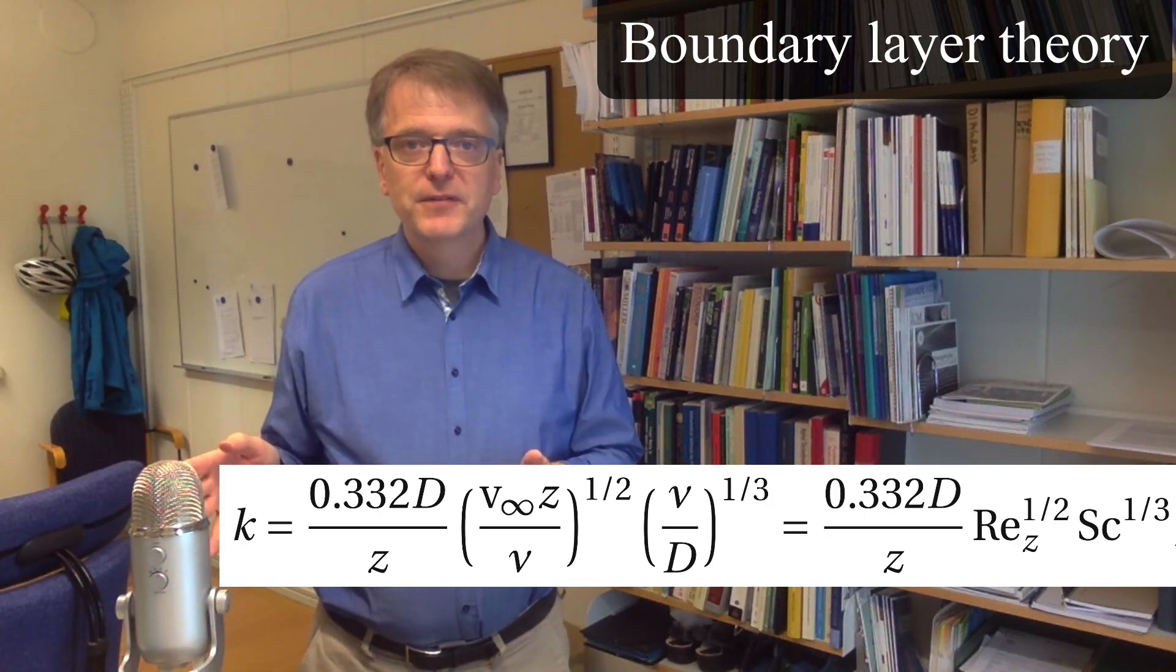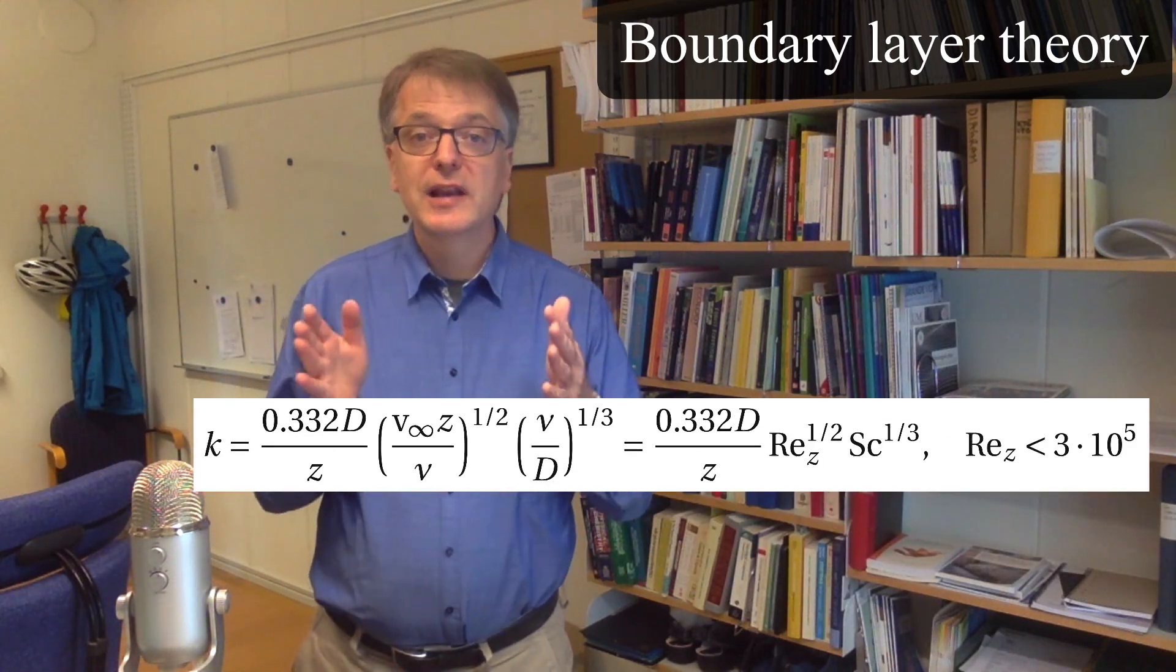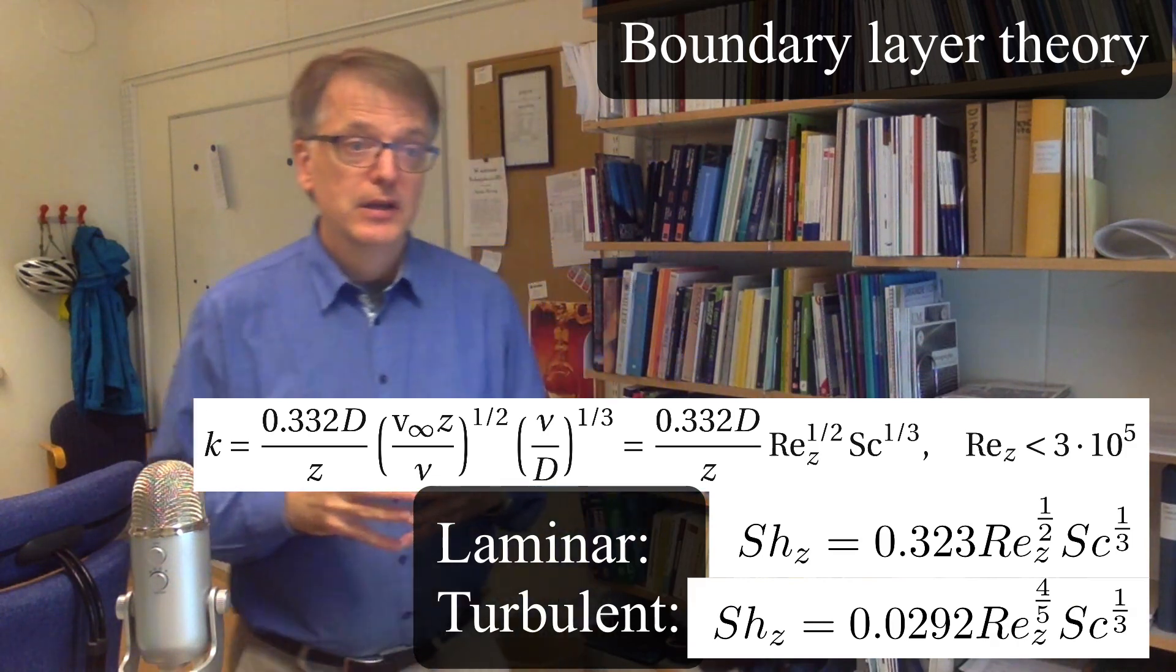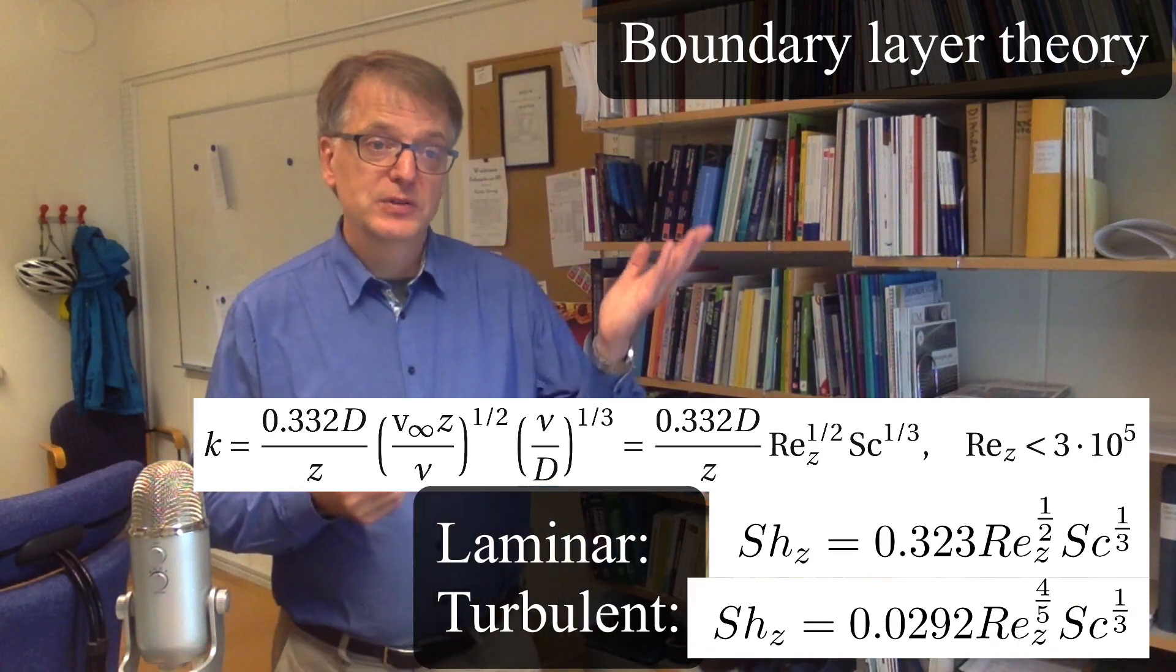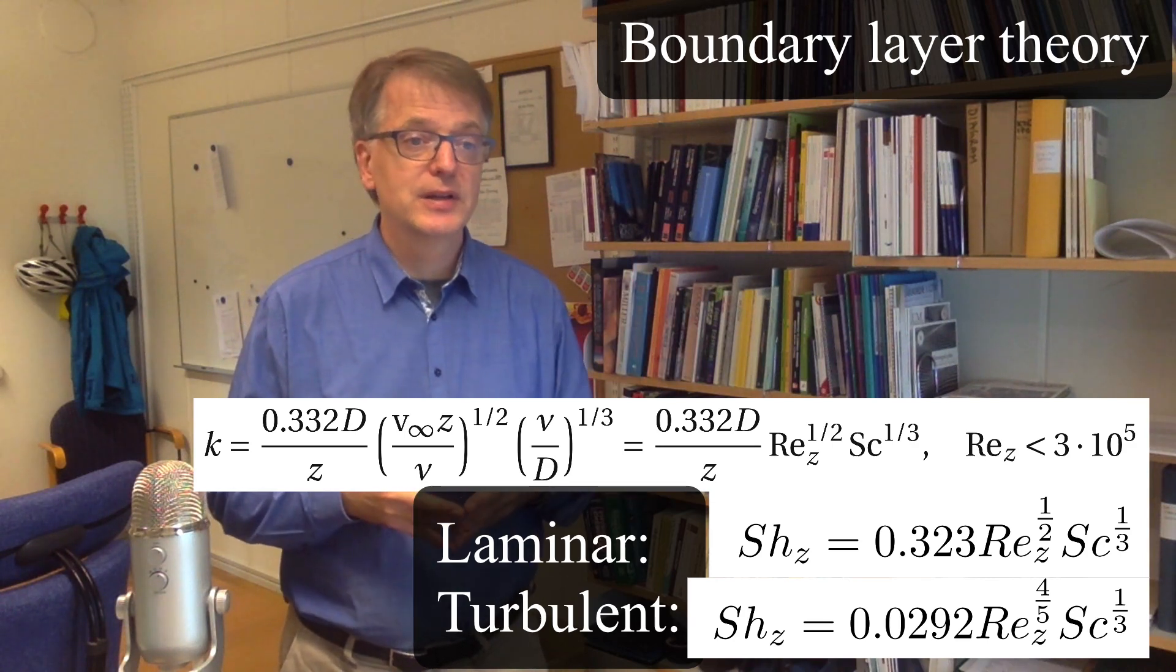The mass transfer coefficient will be different, and different equations will be used if we are in the laminar zone or if you are in the turbulent zone. So for laminar flow, you can use an equation like this, and you see that you have both Reynolds number and Schmidt number in there.